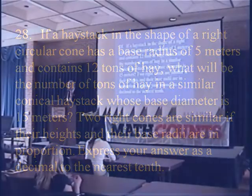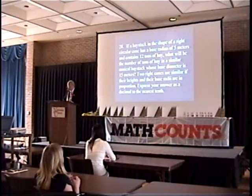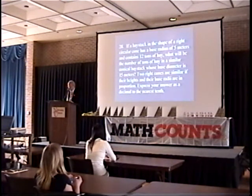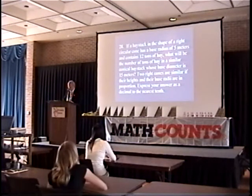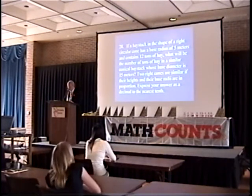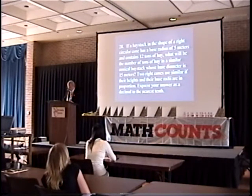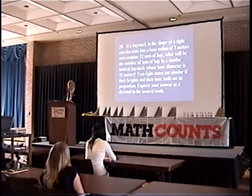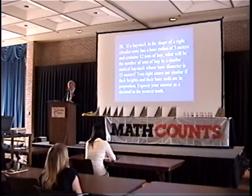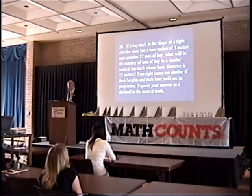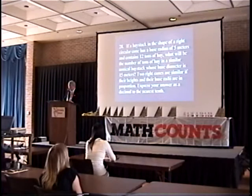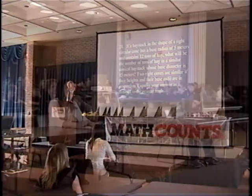A haystack in the shape of a right circular cone has a base radius of 5 meters and contains 12 tons of hay. What will be the number of tons of hay in a similar conical haystack whose base diameter is 15 meters? Two right cones are similar if their height and base radii are in proportion. Express your answer as a decimal to the nearest tenth.